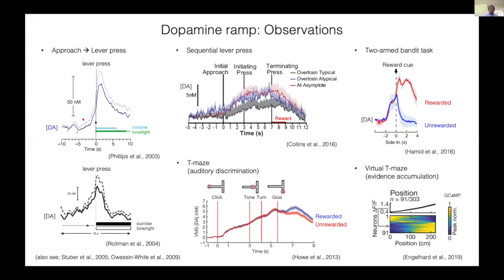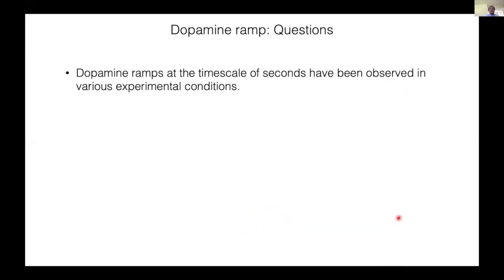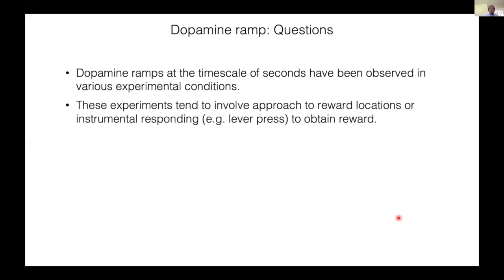Dopamine ramps have been observed in multiple experiments such as rats approaching and pressing a lever to obtain different rewards like cocaine or sucrose, or rats performing a sequence of actions to obtain reward. Dopamine ramps observed also in navigational contexts, performing auditory discrimination or evidence accumulation. Dopamine ramps have also been observed in simpler decision making paradigms using nose pokes.